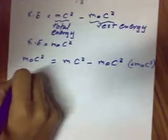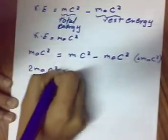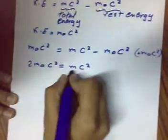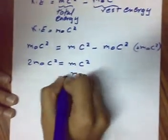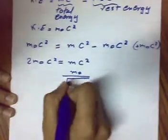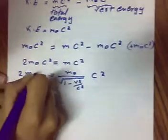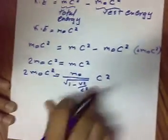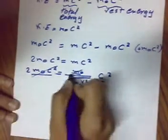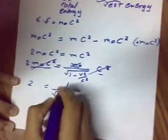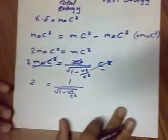We get 2m0c squared equals mc squared. And with the relativistic mass we have m0 over square root of 1 minus v squared over c squared. So 2 equals 1 over square root of 1 minus v squared over c squared.